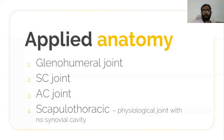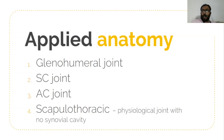Other joints include the sternoclavicular joint, acromioclavicular joint, and scapulothoracic joint. The scapulothoracic joint is not an actual joint — there is no synovial joint — but it is a physiological joint. The sternoclavicular, acromioclavicular, and scapulothoracic movements functionally help the shoulder joint attain its complete range.